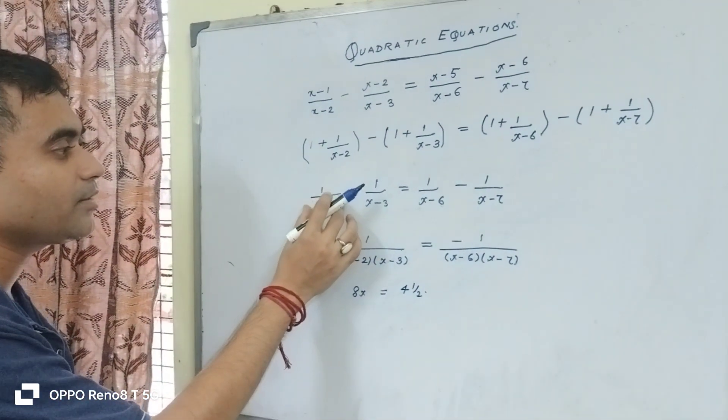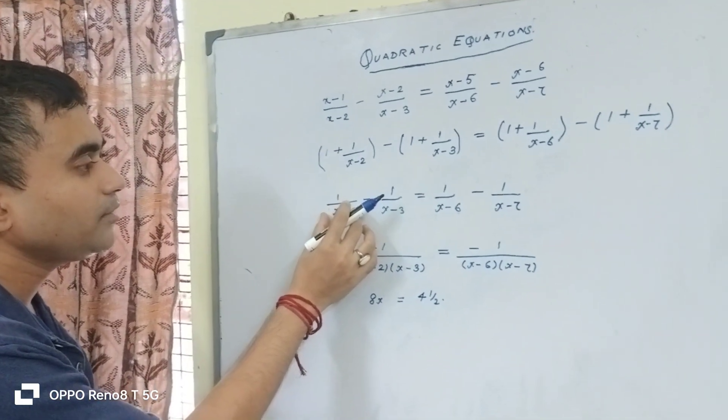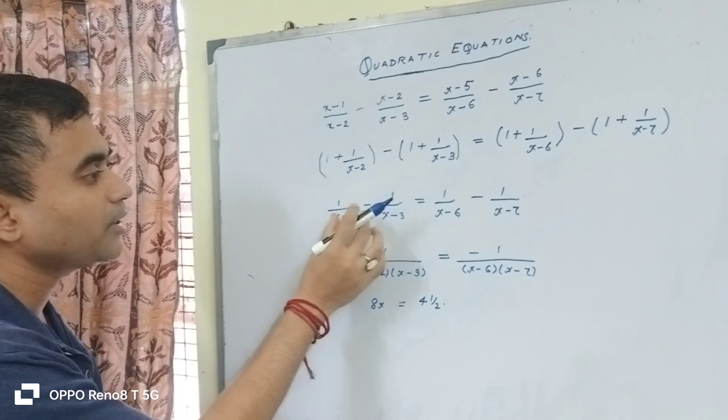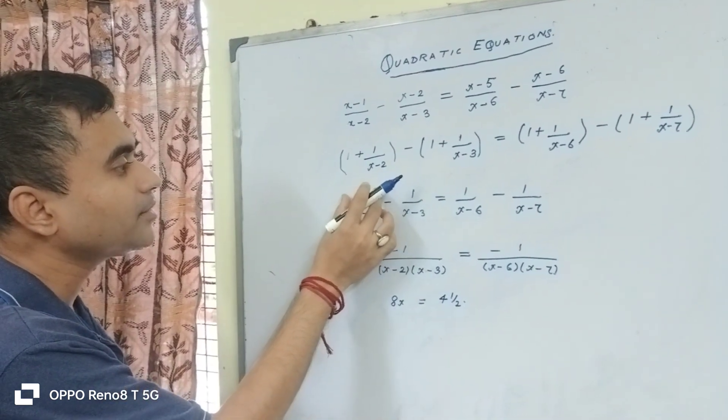Now this is a kind of a quadratic equation. What you do is, in the denominator you multiply these two. Again these are consecutive terms.